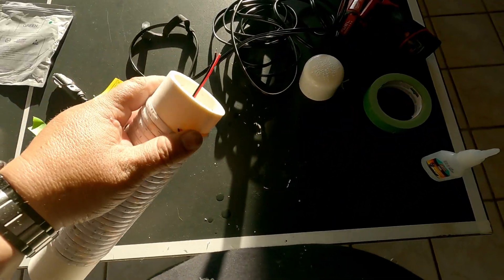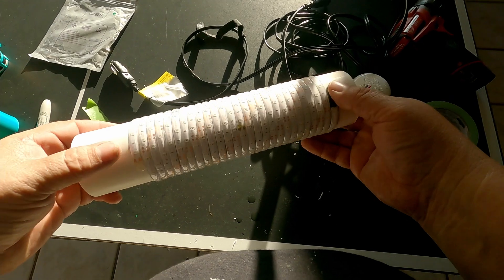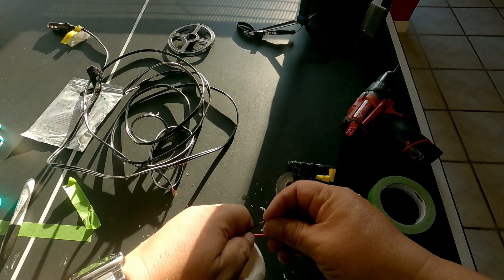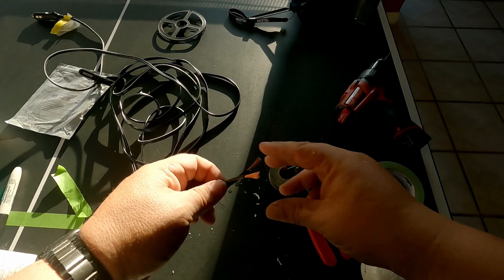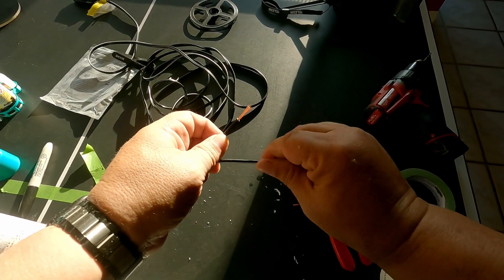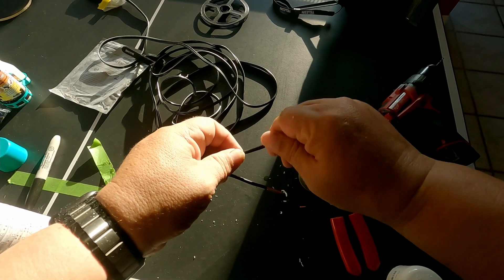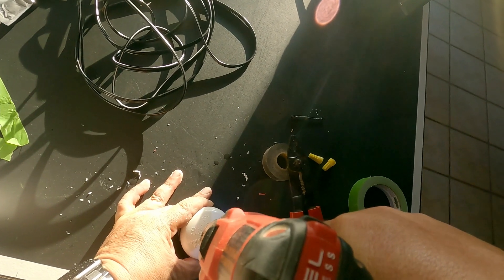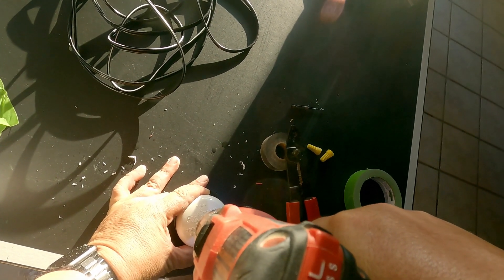Get in there like that so that we can make our connections. Okay. So I stripped these wires back. I cut that plug off and stripped these wires back. Now what we need to do is drill a hole that's big enough for the wires to get through in the cap.